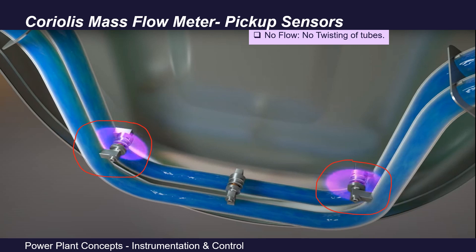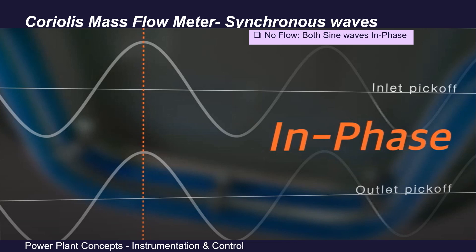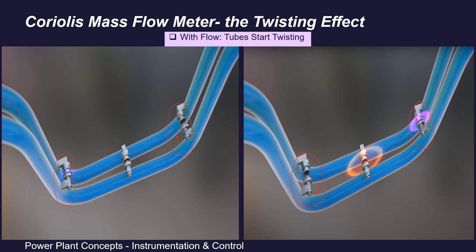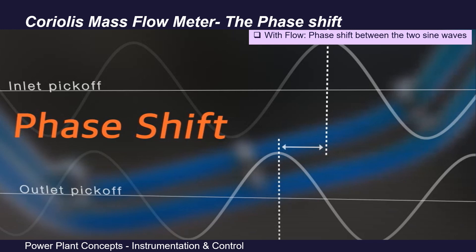The inlet and outlet Coriolis pickup sensors are mounted on the flow tubes as shown in this picture. As the tube oscillates, the voltage generated from each pickup creates a sine wave. The sine wave generated indicates the motion of one tube relative to the other. When there is no flow in the tubes, the inlet and outlet sine waves are in phase — they are in synchronized motion. However, when fluid is flowing through the sensor tubes, Coriolis forces are induced in both flow tubes, causing the flow tubes to twist in opposition to each other. As a result of this twist, the sine waves are shifted in phase and are asynchronous.